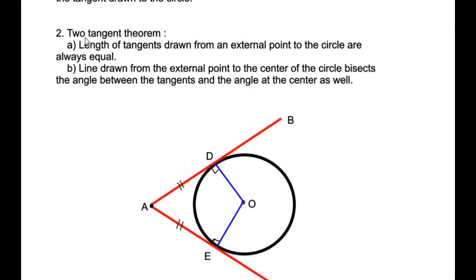The second part of the two-tangent theorem states that a line drawn from the external point to the center of the circle bisects the angle between the tangents and also the angle at the center. So if the total angle at A is 40 degrees it becomes 20 and 20, and if the total angle at the center is 140 degrees it is divided as 70 and 70.